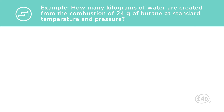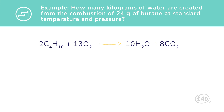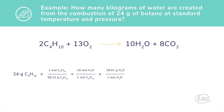Here's an example: how many kilograms of water are created from the combustion of 24 grams of butane? The balanced equation is: 2C₄H₁₀ + 13O₂ yields 10H₂O + 8CO₂. We have 24 grams of butane and we want the weight of water in kilograms. Start by converting grams of butane to moles of butane by multiplying by one over the molar mass of butane. Then convert to moles of water by multiplying by the molar ratio given in the balanced equation — for every two moles of butane, 10 moles of water will be produced. Convert the moles of water to grams of water by multiplying by the molar mass, then convert grams of water to kilograms by dividing by 1,000. So we can produce 0.037 kilograms of water with 24 grams of butane.